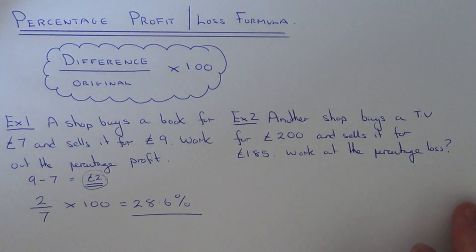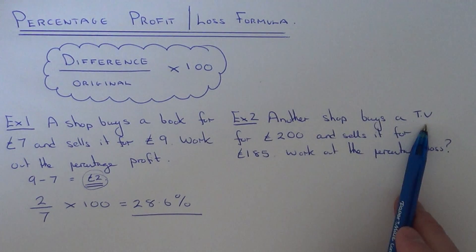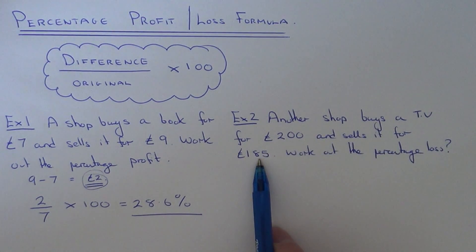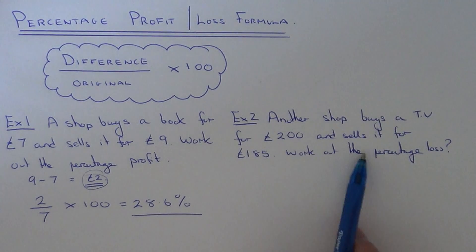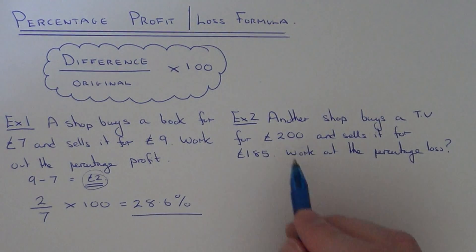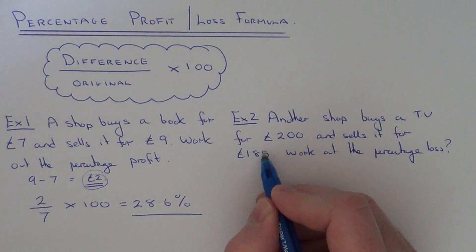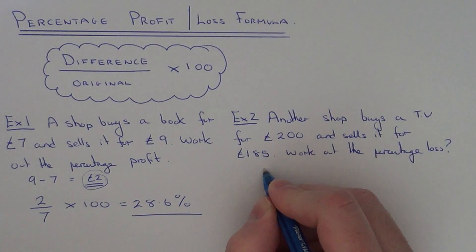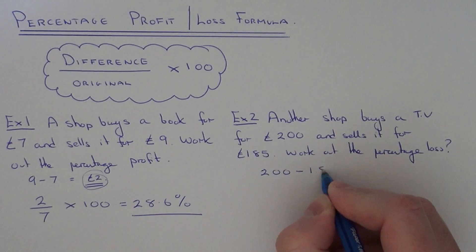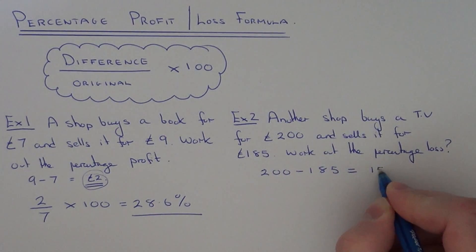So let's move on to example 2. Another shop buys a TV for £200 and sells it for £185. Work out the percentage loss in the sale. Again, you need to work out the difference between the cost price and the selling price, so we do 200 minus £185, which gives us £15.